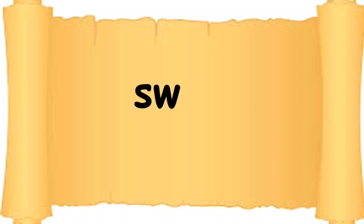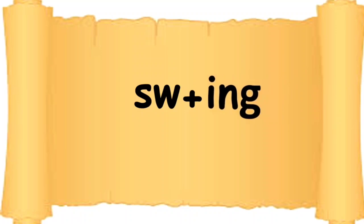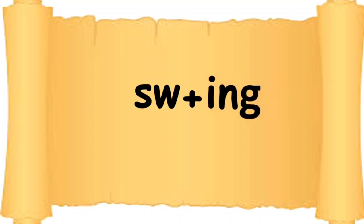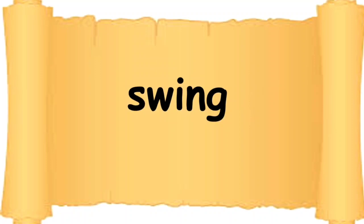Here you can see 'sw.' What can you see with the sound 'sw'? Here comes plus, and now comes 'ing.' So we get the word: Swing. Sw-ing. Swing. Children, please repeat after me. Sw-ing. Swing.